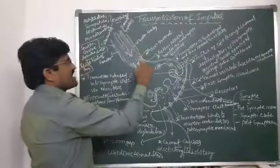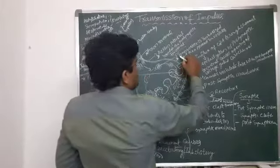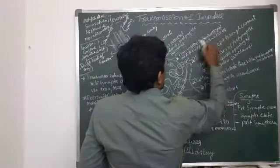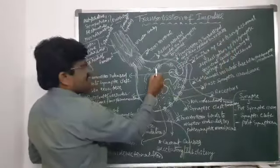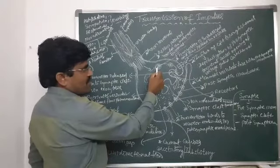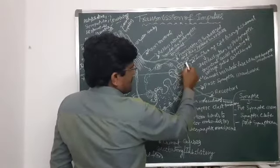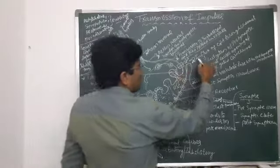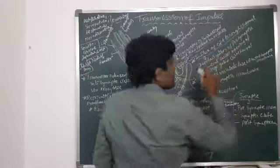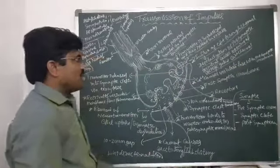The action potential invades the presynaptic terminal area while the impulse is being transported. The transmitter is synthesized and then stored in vesicles — there is a vesicle-type structure where transmitter storing happens. Calcium-gated channels are also present there, and calcium influx occurs through these channels.